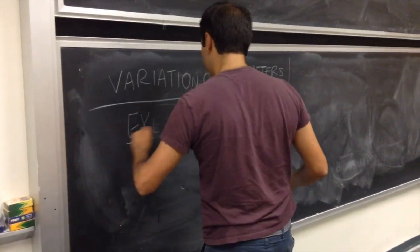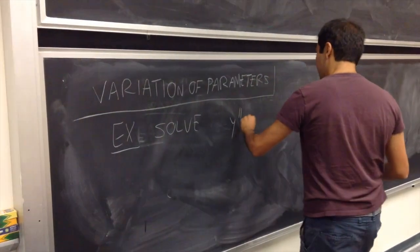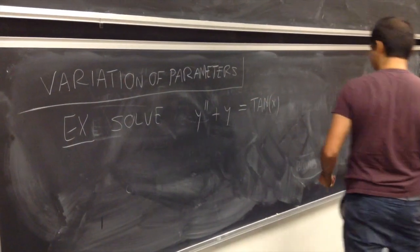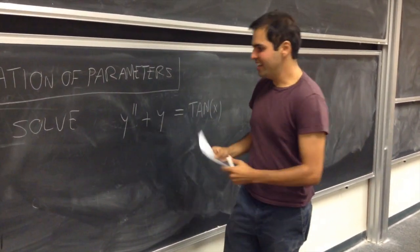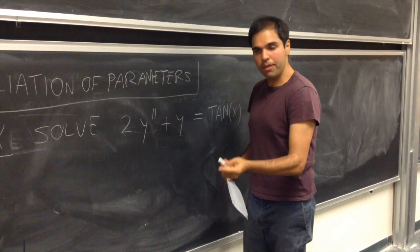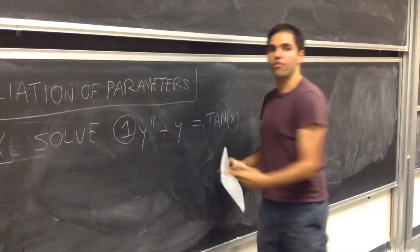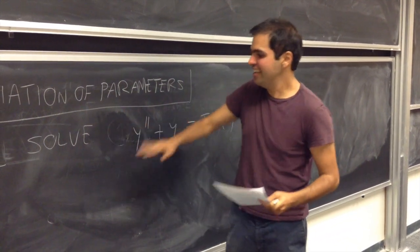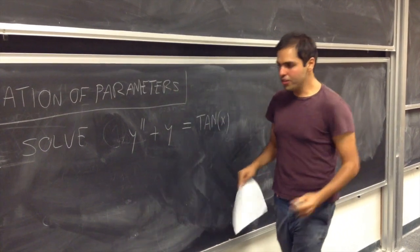Today our goal is to solve the differential equation y double prime plus y equals tangent of x — find the complete solution. By the way, if you have a coefficient of 2 here, just divide everything by 2 to get 1, because this technique really works if the coefficient of the highest term is 1. Fortunately, the coefficient here is 1.